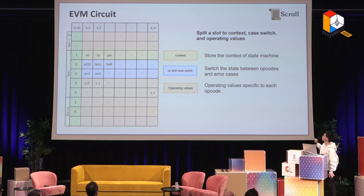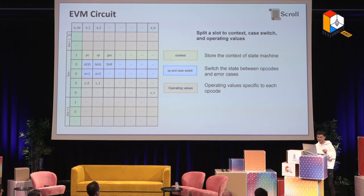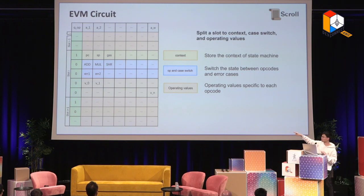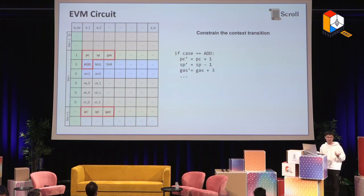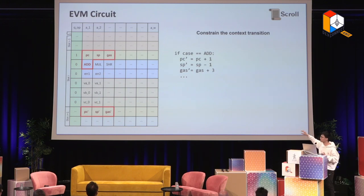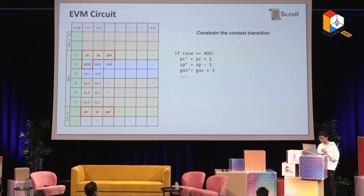There are three different kinds of content within a slot. One is context — it stores the machine context: program counter, stack pointer, and gas. There is the opcode and a case-switch, which means if you are working on an add operation, you fill those cells with one. And there are operand values specific to each opcode. For add, you need two operands and their result, plus some carries for proving. When you've executed add in the next slot, your program counter needs to increment by one, your stack pointer decrements by one, and your gas decreases by what was consumed.